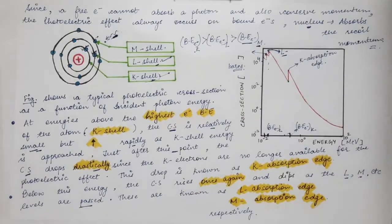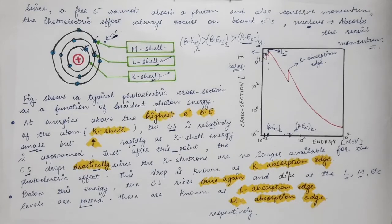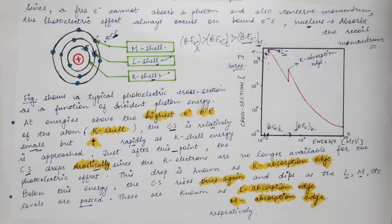In the next lecture we will discuss Compton scattering — how the gamma photon interacts with the free electron via Compton scattering.